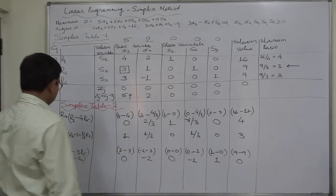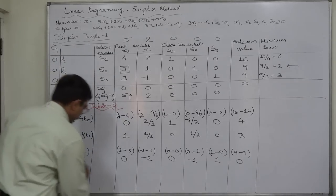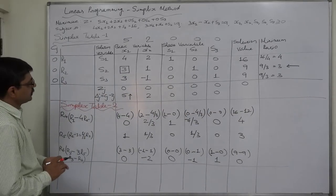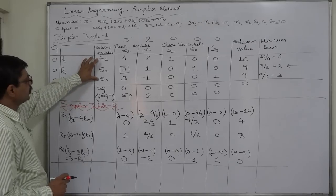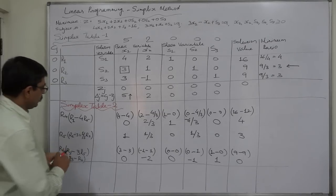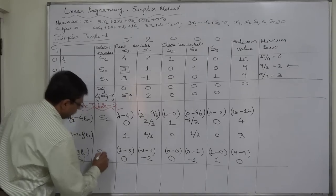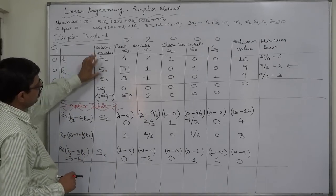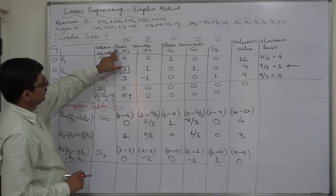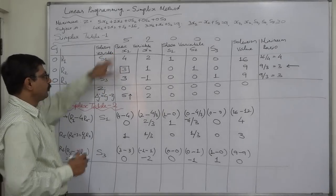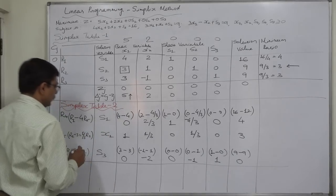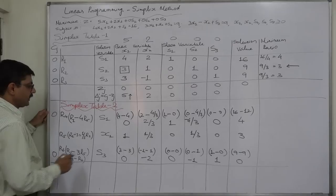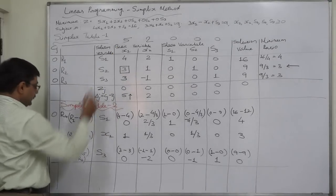Now we write the solution variables. There will be no change in the solution variable for the two rows other than the key row — S1 and S3 remain. But the solution variable of the key row must change: S2 is dropped and replaced by X1, the variable of the key column. Accordingly, the CJ values for the first and last rows remain 0, but for X1 it is 5.